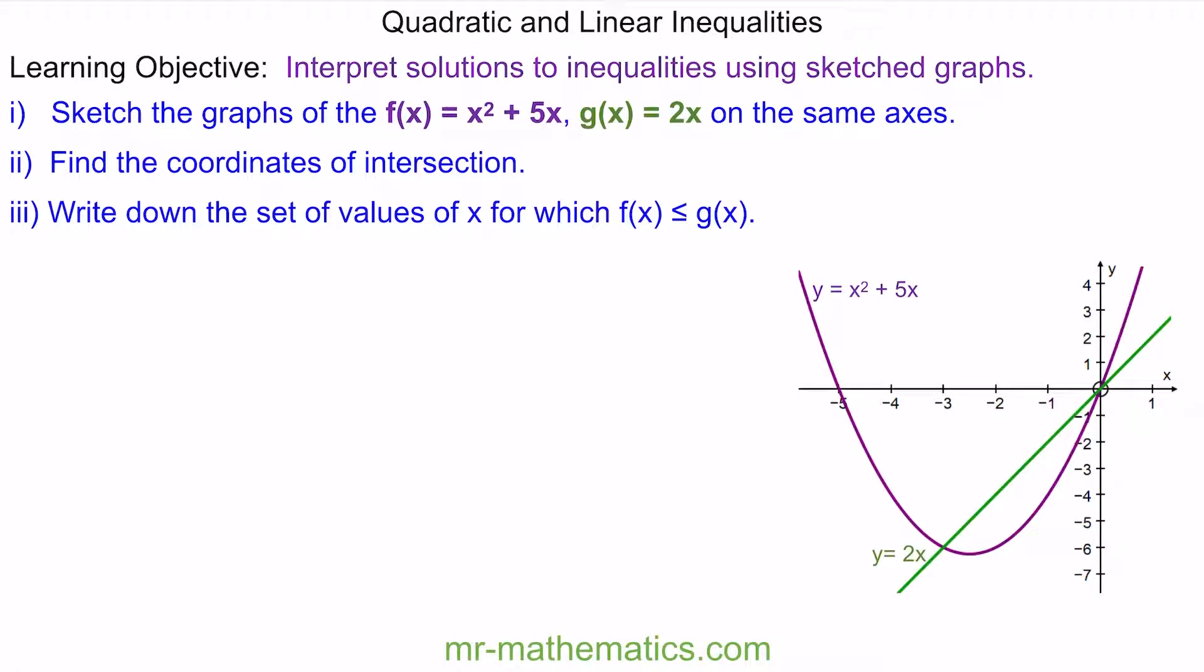So here we have our sketch graph. Now remember the two y values of the points of intersection are the same. So we're going to find these two points algebraically, where x squared plus 5x is equal to 2x. We'll make this quadratic equal to 0 by taking away 2x on both sides. So x squared plus 3x is equal to 0.